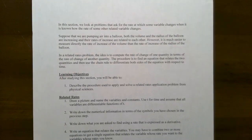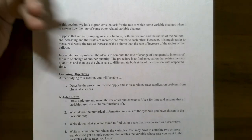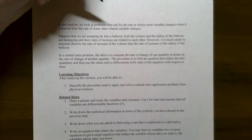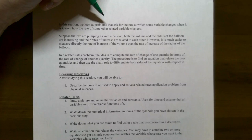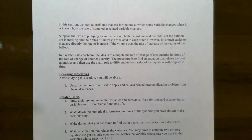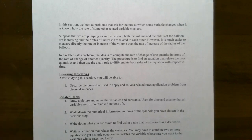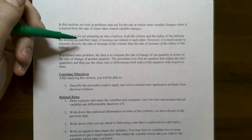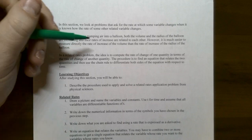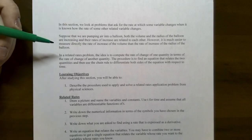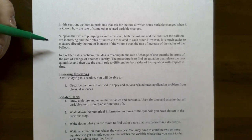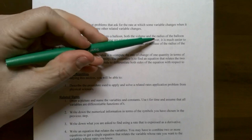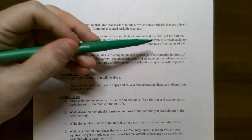In this section we will need to use implicit differentiation because this section is about looking at problems that ask for the rate of change of one variable when it's known how the rate of change of another related variable is. For example, you could have air being pumped into a balloon. We know the radius is related to the volume of a sphere. If we know how the volume is changing we might be able to find out how the radius is changing, and vice versa.